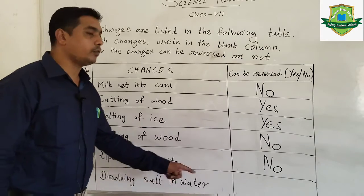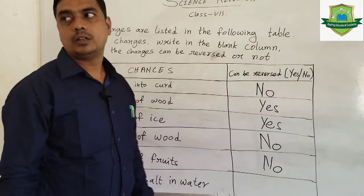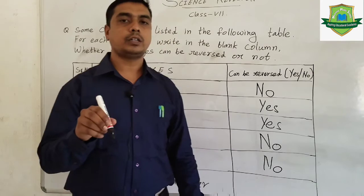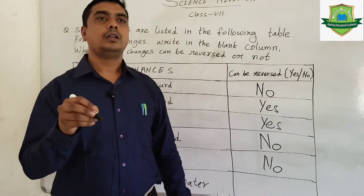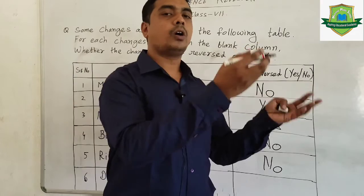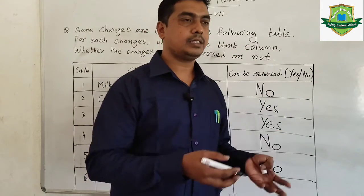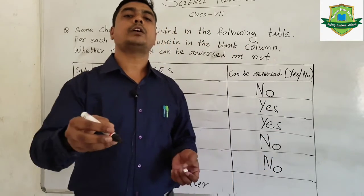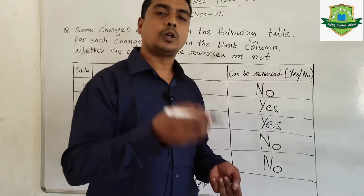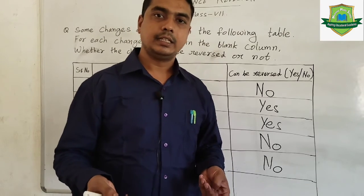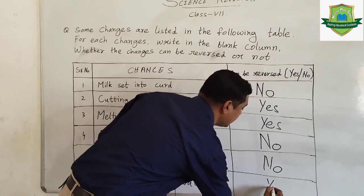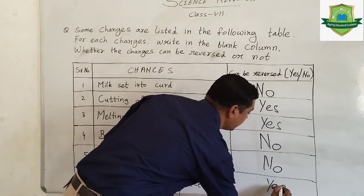Now, dissolving salt in water. If I am dissolving some amount of salt into water, it will dissolve. But again, when I put it out in the sun rays, what happens? Water will evaporate and you will get the salt again. So this can be reversed — yes, it can be reversed.